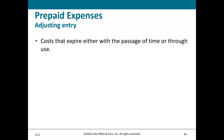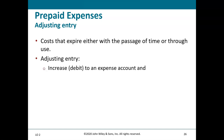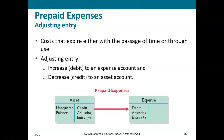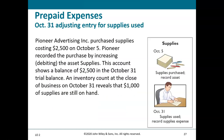Costs expire either with the passage of time or through use. The adjusting entry increases an expense account with a debit and decreases an asset account with a credit. The asset account has an unadjusted debit balance; as time passes or the asset is used, you debit the expense and credit the asset to get the correct balances.